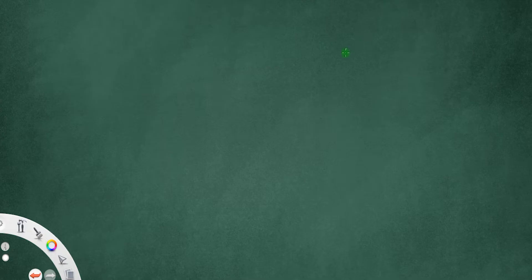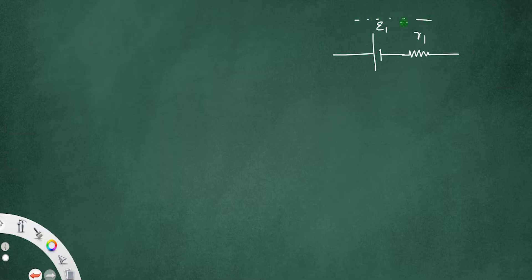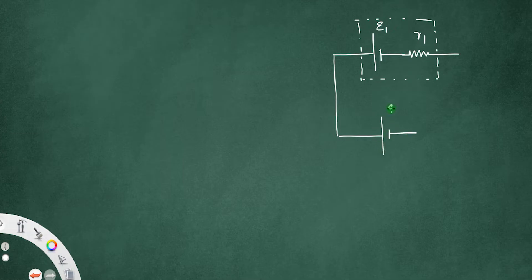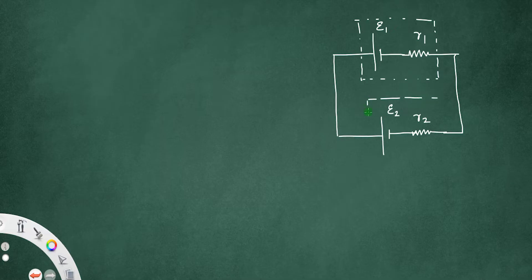Let us derive an expression for the equivalent EMF of two cells connected in parallel. Suppose we have two cells: the first cell having EMF E1 and internal resistance R1, and the second cell having EMF E2 and internal resistance R2. A cell always has an EMF and an internal resistance. Both of these cells are connected between the points A and B.